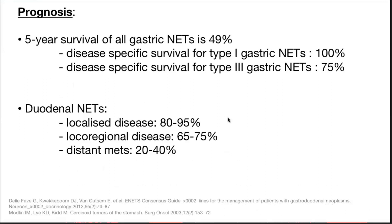Prognosis: overall 5-year survival for gastric neuroendocrine tumors is 49%; disease-specific for type 1 is nearly 100%, while for type 3 it is 75%. For duodenal neuroendocrine tumors with localized disease, 5-year survival is 80 to 95%; for locoregional disease with lymph node involvement, 65 to 75%; and for patients with distant metastasis on presentation, 5-year survival is only 20 to 40%.